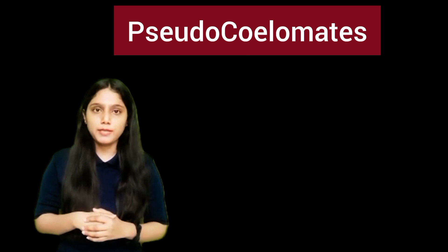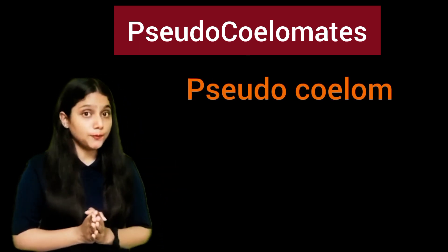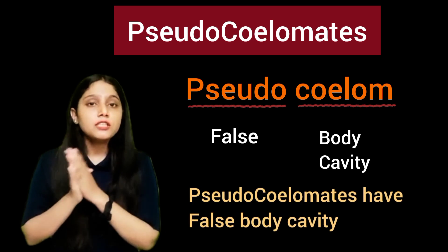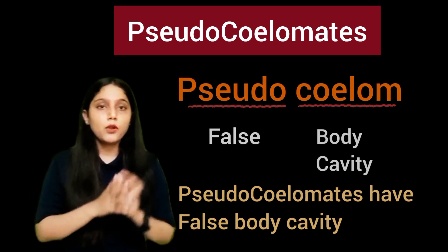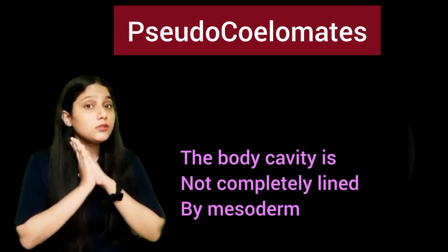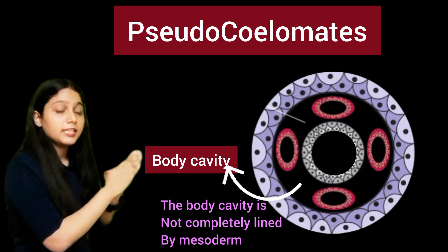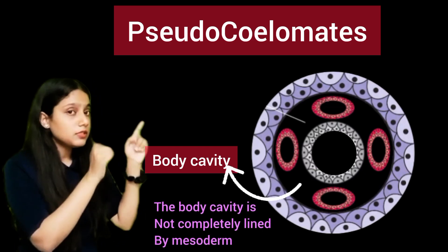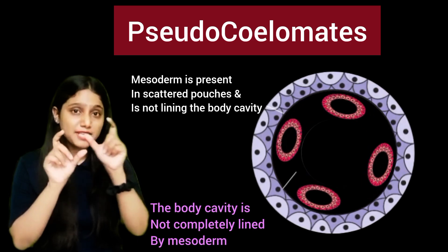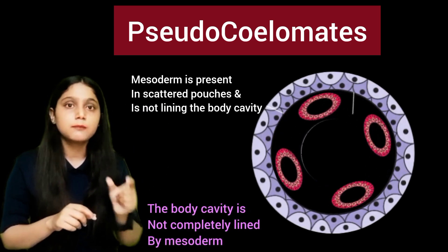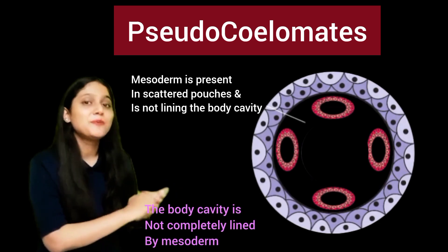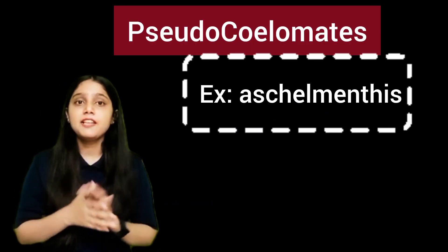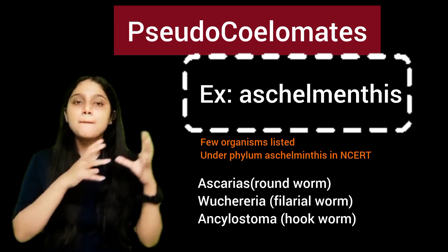Next, we are going to talk about pseudocoelomate organisms. In pseudocoelomate organisms, we see a pseudocoelom. Pseudo means false, and coelom means body cavity, so we see a false body cavity in these organisms. The body cavity is present between mesoderm and endoderm, but it is not lined by mesoderm. In fact, the mesoderm is present in scattered pouches — it is not a continuous lining. Such a type of coelom is called pseudocoelom, and organisms possessing pseudocoelom are called pseudocoelomate organisms. The example is phylum Aschelminthes — whatever organisms belong to phylum Aschelminthes possess pseudocoelom.